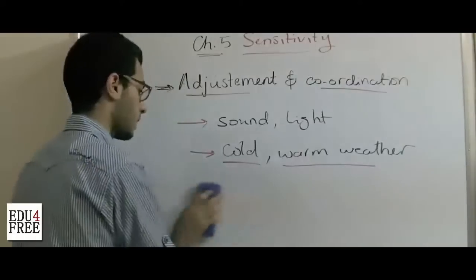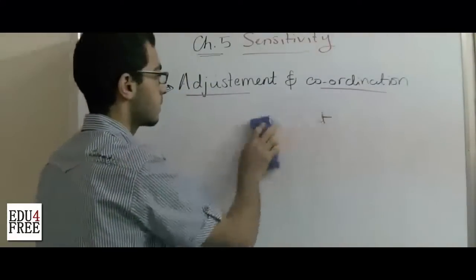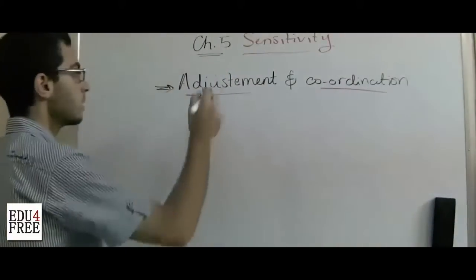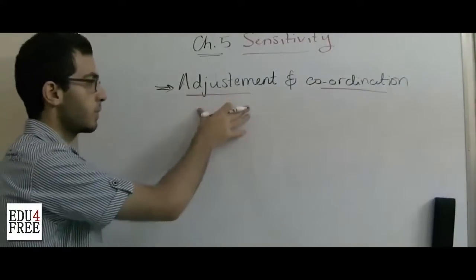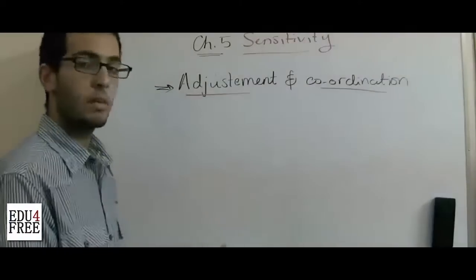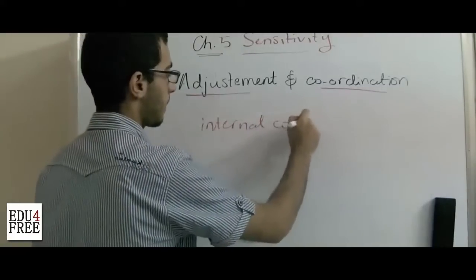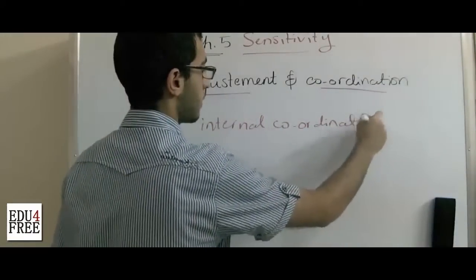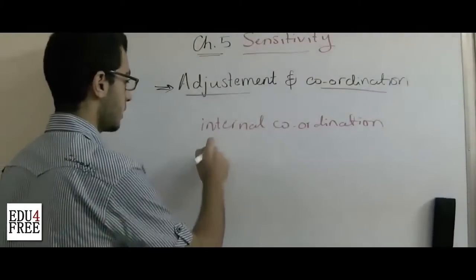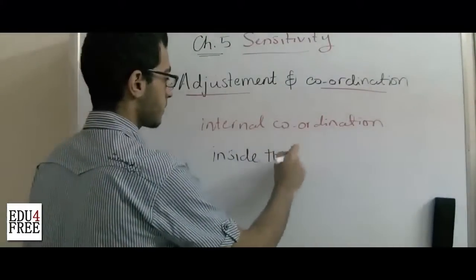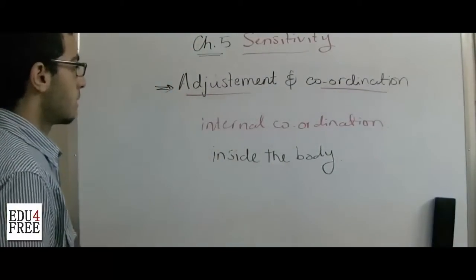Second, the coordination. We may call the adjustment the coordination of the body with the surrounding environment. There is another type of coordination, which is the internal coordination. This internal coordination is found inside the body, between the body systems.